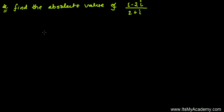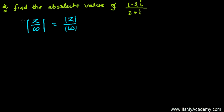After learning the properties of absolute value of a complex number, or modulus of a complex number, now we can solve this type of question. While learning the properties of modulus of a complex number, what we have learned is that if you have two complex numbers in the ratio — Z divided by another complex number W — and if you want to find out the absolute value of this whole ratio, then it's simply the absolute value of Z divided by absolute value of W. This is the property of modulus of a complex number.